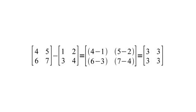Matrix subtraction is a relatively simple operation. You need two matrices of the same dimensions. And to subtract them, you simply subtract each row and column from the corresponding row and column, as you see here.